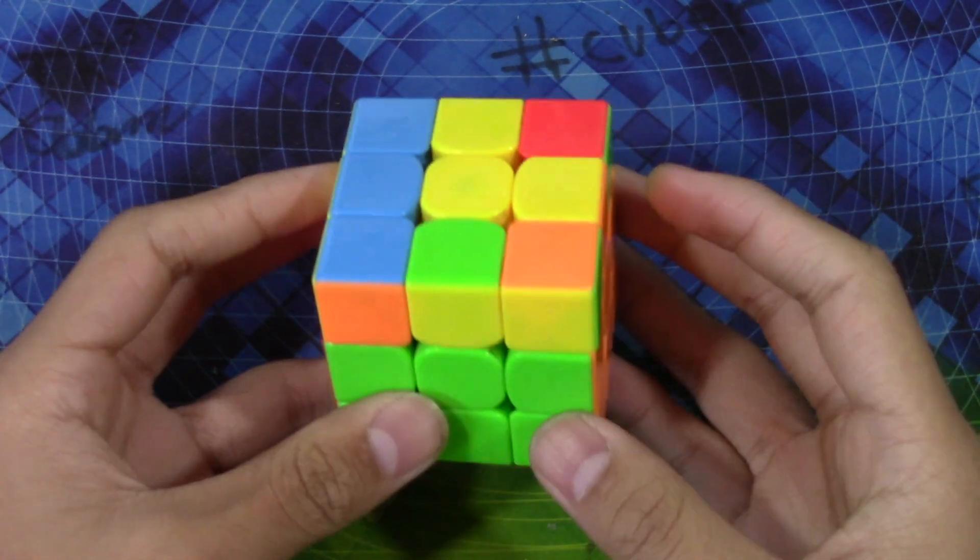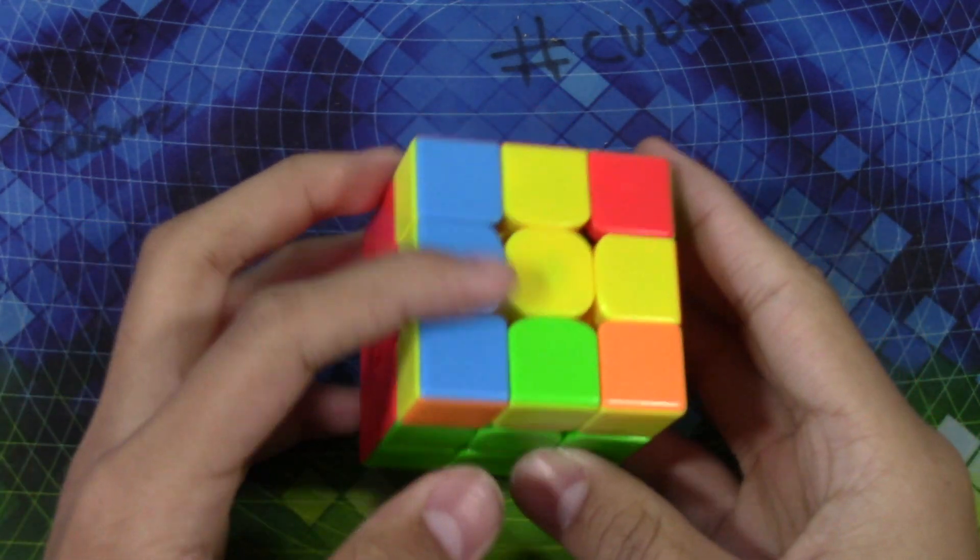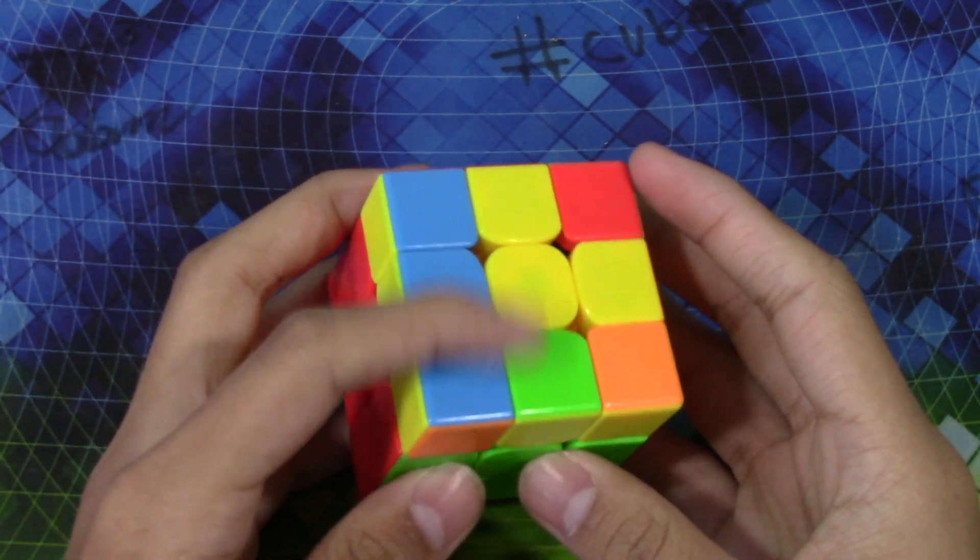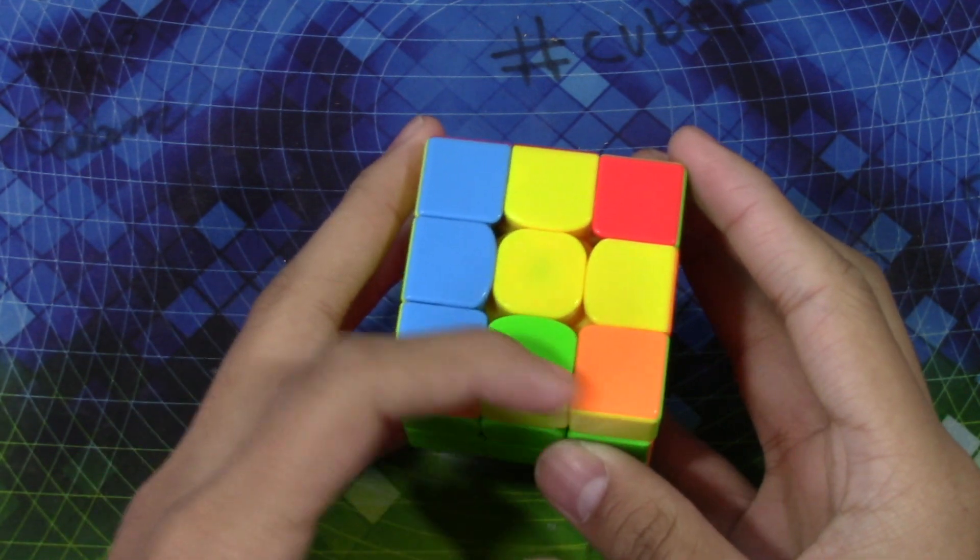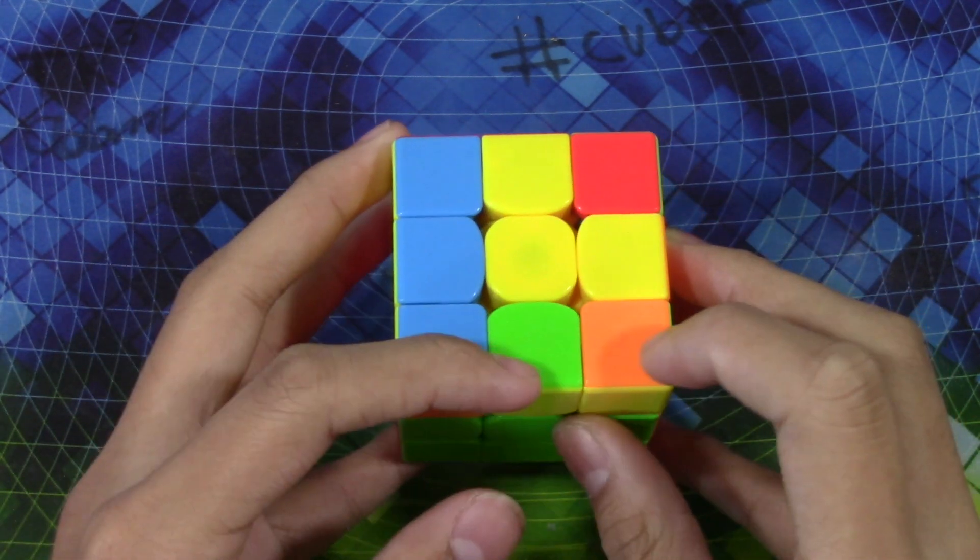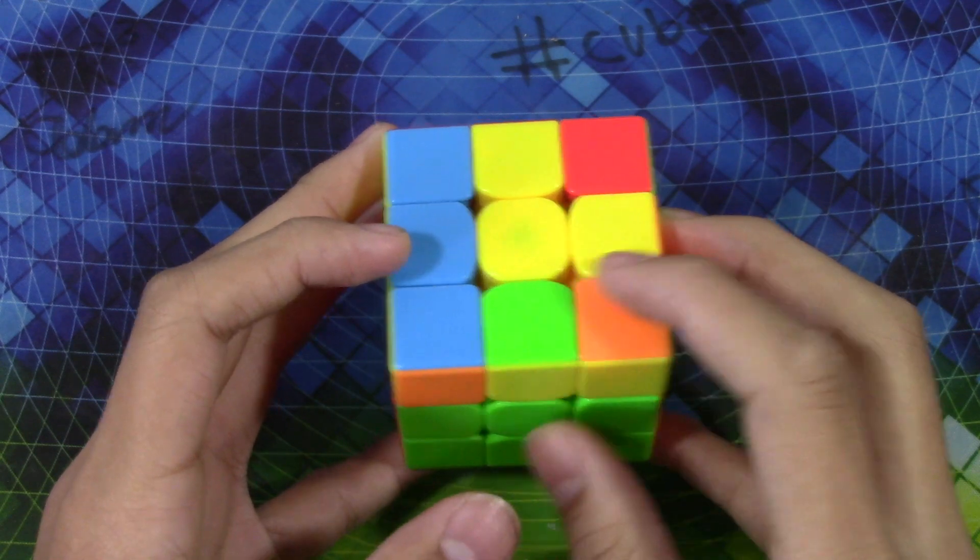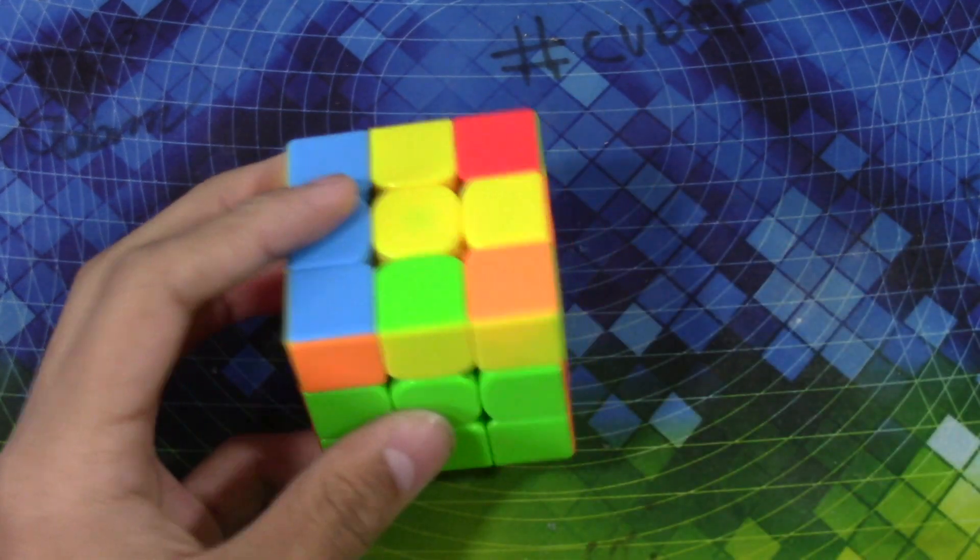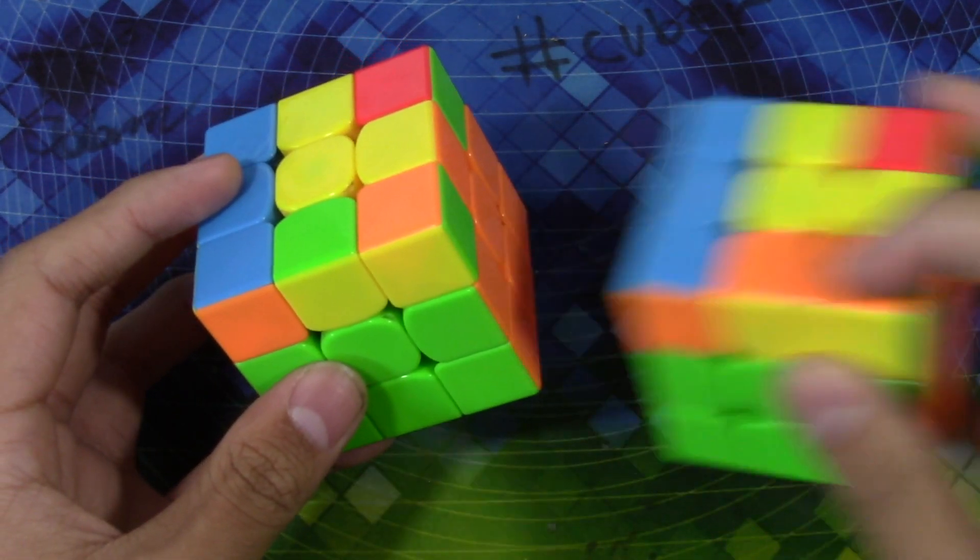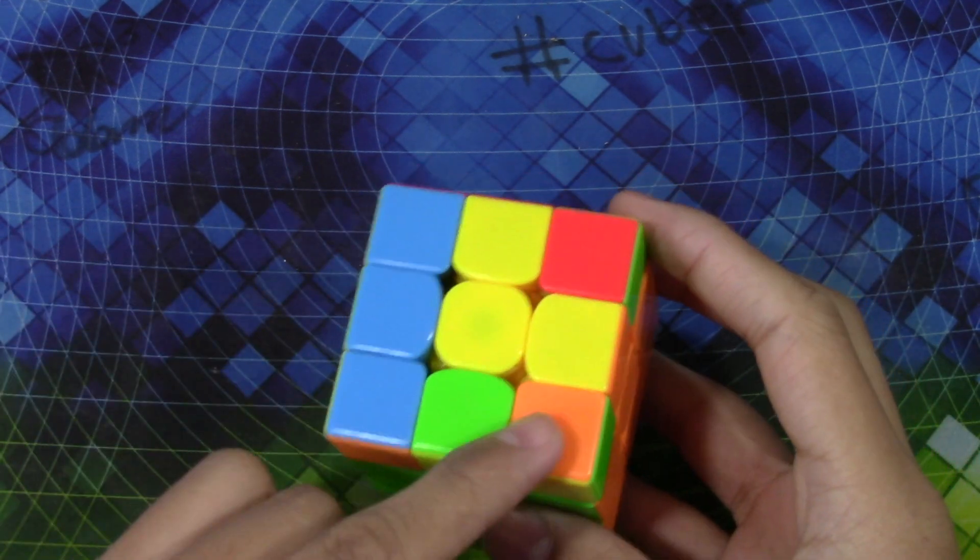For this next case, as you see again it has this diag pie and then a bar here. But this time instead of the two colors being opposite, these two colors, this time they're just not opposite and not matching.